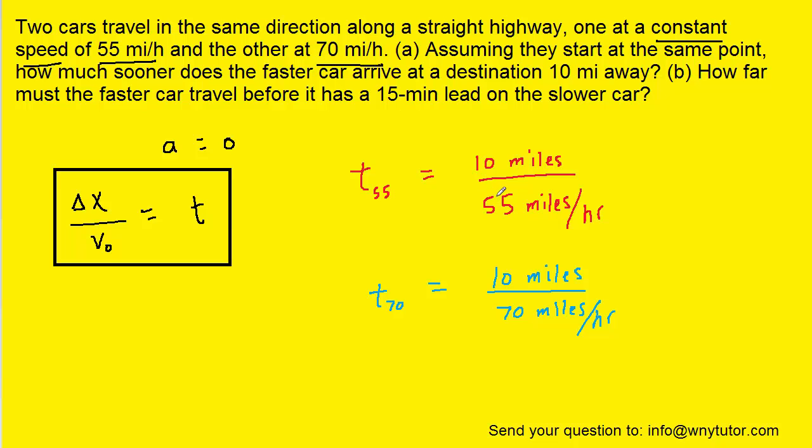So here we have set up the calculations. Notice that the displacement for both cars is the same, 10 miles in both cases. If we pick up our calculators and simplify this, we see that the time for the 55-mile-per-hour car to reach the destination is approximately 0.182 hours, and the time for the 70-mile-per-hour car is approximately 0.143 hours.